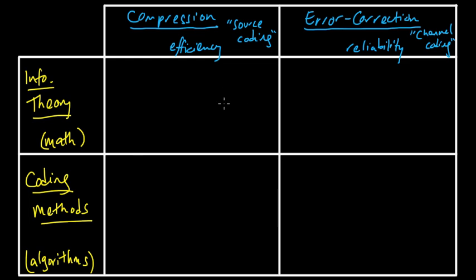So now that we have our nice matrix, we need to fill it in. So what are we going to put here? I'm going to give you just the broad outline of the main core topics in information theory.